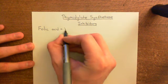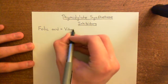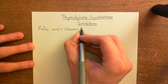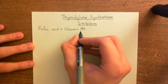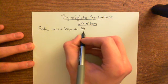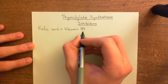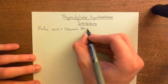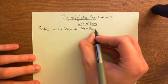Folic acid is often referred to as vitamin B9. There isn't just one vitamin B — there are many, often known as the vitamin B complex. Folic acid is one of these vitamins in the B vitamin complex, and it's also often just known as folate.